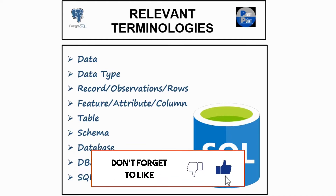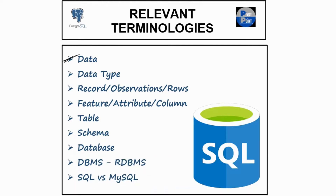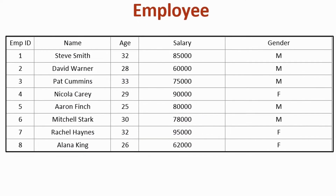Let's get started with the first term, which is data. If we go by theory, data is nothing but a fact about any considerable object. For example, if you consider any individual, then his name, age, salary, blood group, body weight — everything can be considered as data. Each of these single pieces of information like employee ID, name, age, salary, gender — each one of these are data.